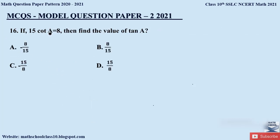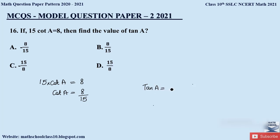Question 16: If 15 cot A = 8, find the value of tan A. Dividing both sides by 15 gives cot A = 8/15. Since tan A = 1/cot A, taking the reciprocal of 8/15 gives tan A = 15/8. The correct option is option D.